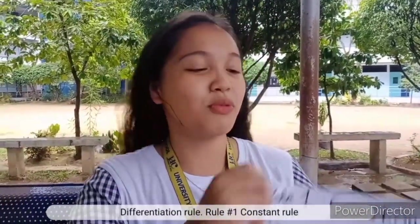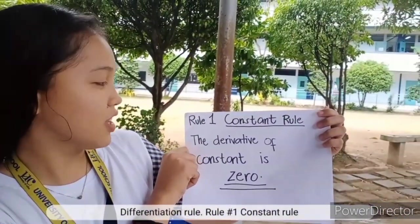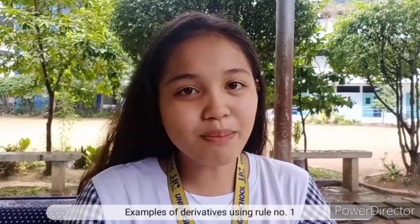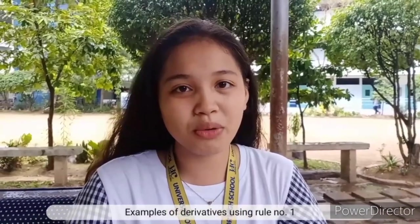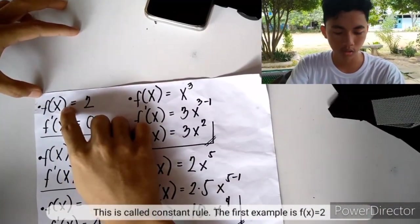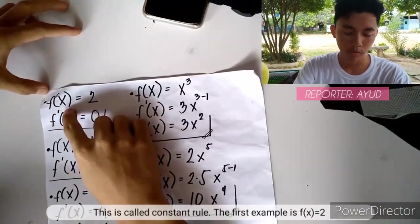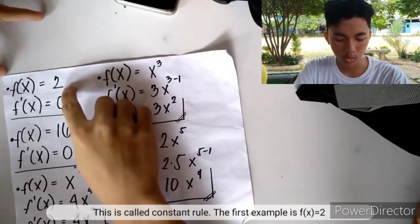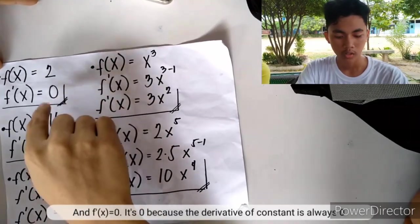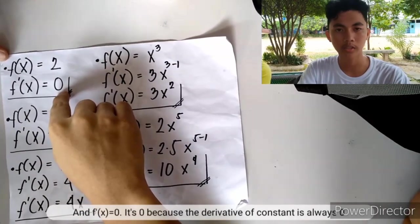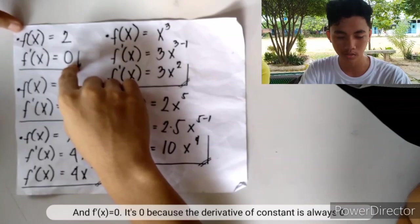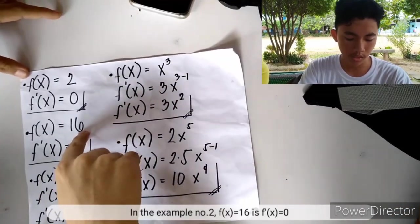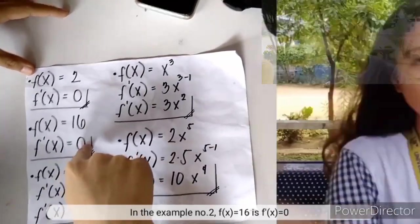Differentiation rules. Rule number 1: Constant rule — the derivative of a constant is zero. For example, f(x) equals 2, so f prime(x) equals 0. And f(x) equals 16, so f prime(x) equals 0. The derivative of any constant is always 0.